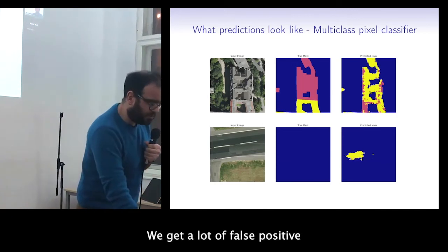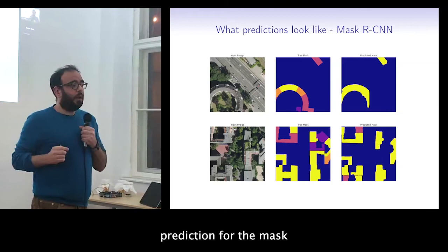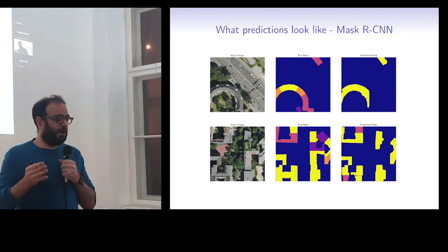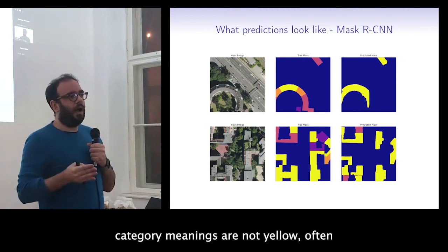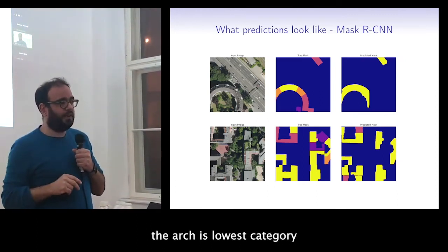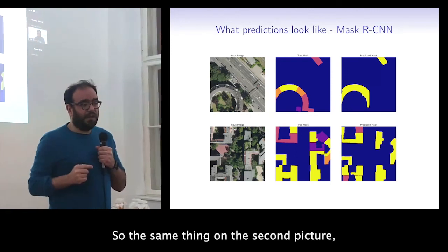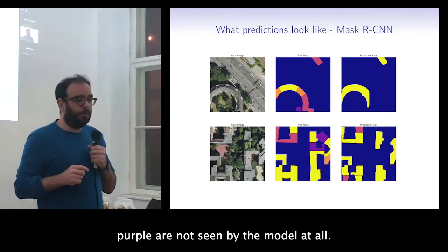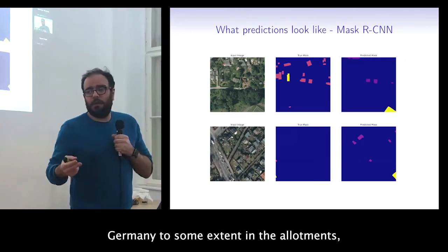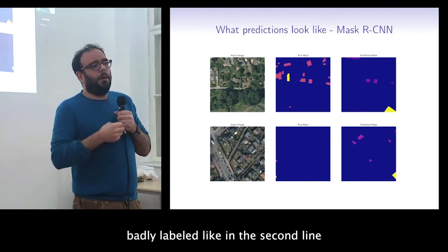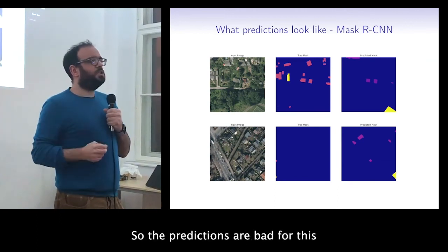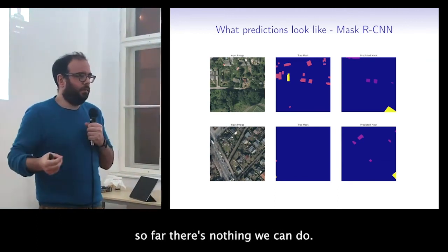For Mask R-CNN predictions, the lowest categories are often not well predicted. Looking at one image, the bottom part of an arch in the lowest category is not predicted well. In another image, buildings in the purple (lower) category are simply not seen by the model at all. A typical problem specific to the German context is allotments — Schrebergärten — which are either badly labeled or in lower roof categories and are rarely seen, so predictions for those are bad.